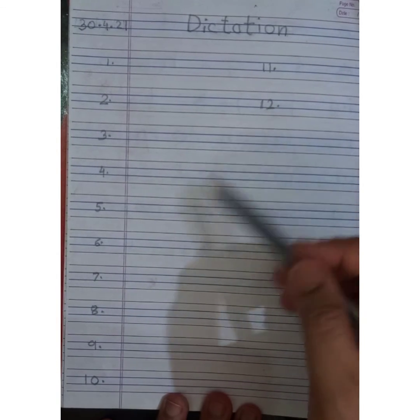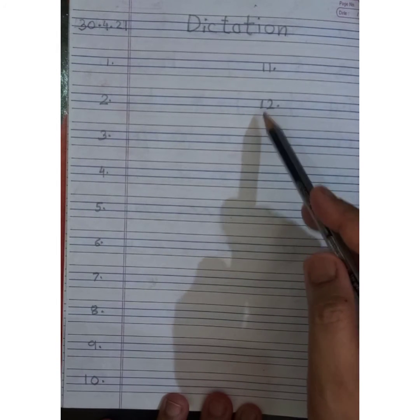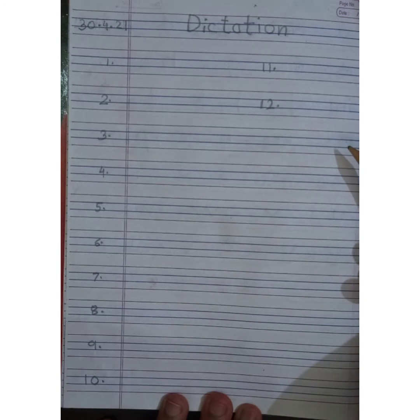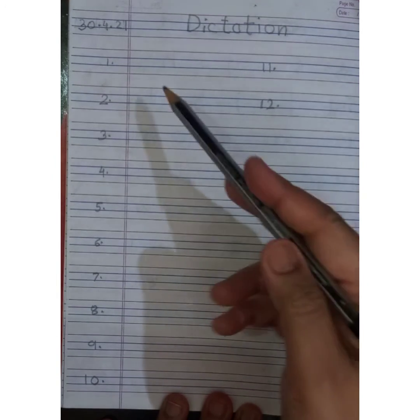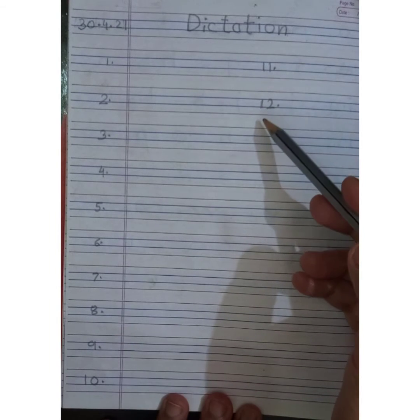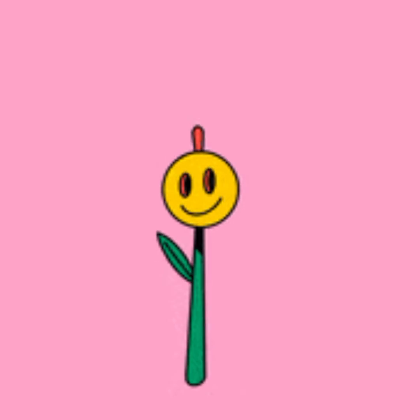Sometimes a child's list finishes at 9, then you can write 10, then 11, then 12. So children, get ready. I'll be dictating the words. The first word is DAD. D-A-D, DAD.